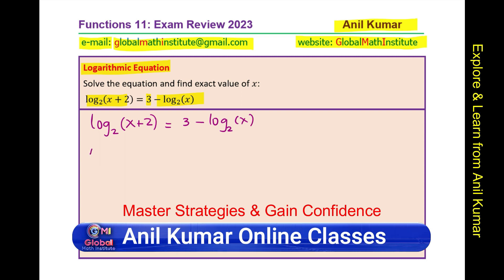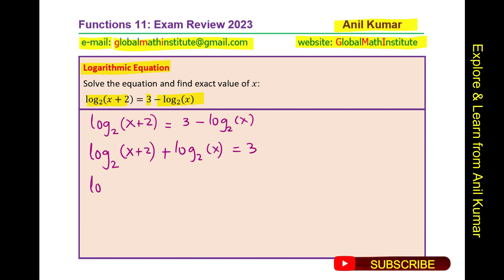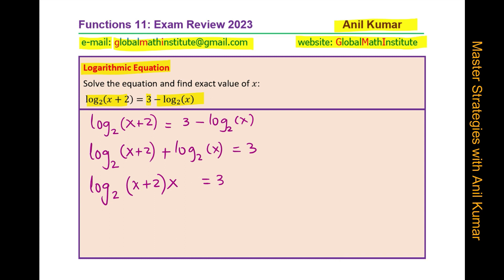Let us bring log base 2 of (x + 2) plus log base 2 of x to the left side, equalling 3. Since we have the same base, we can combine the two log terms using the properties of logarithms to get log base 2 of x(x + 2) = 3. Writing in exponential form: x(x + 2) = 2³ = 8.